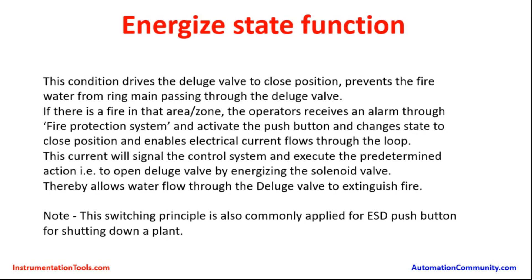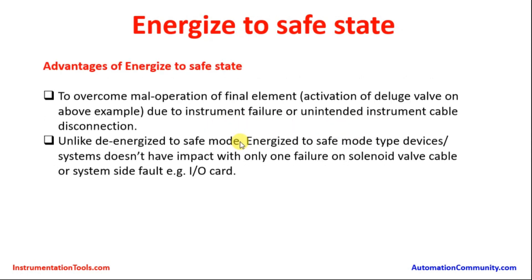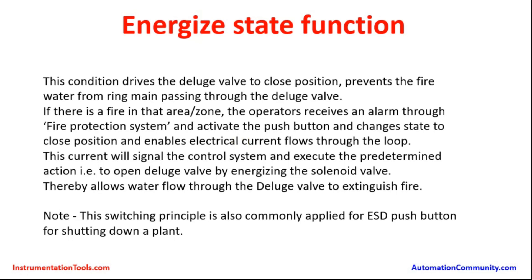So the valves are in closed position, and fire water does not pass through the main D-Ledge valve. If there is a fire in that area or zone, the operator receives an alarm through the fire protection system, activates the push button, changes its state to closed position, and enables electrical current to flow through the loop.